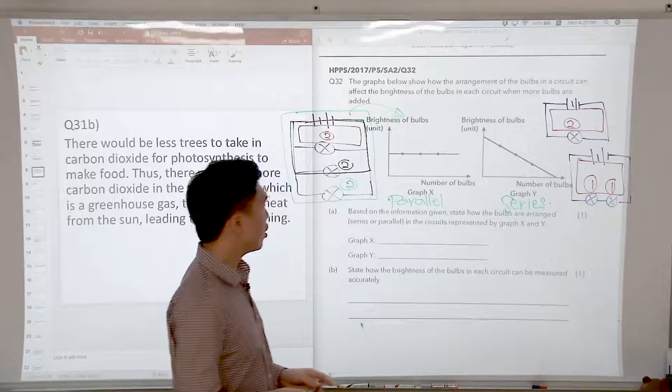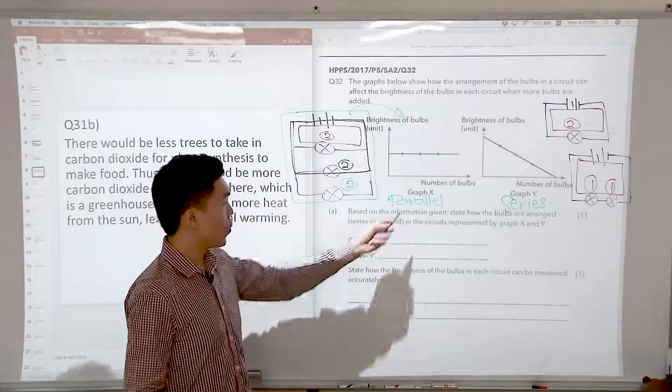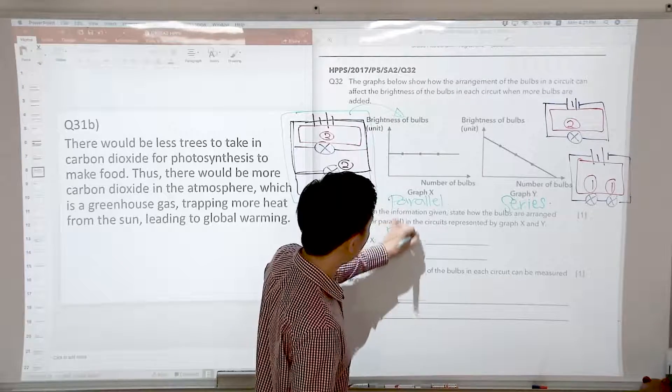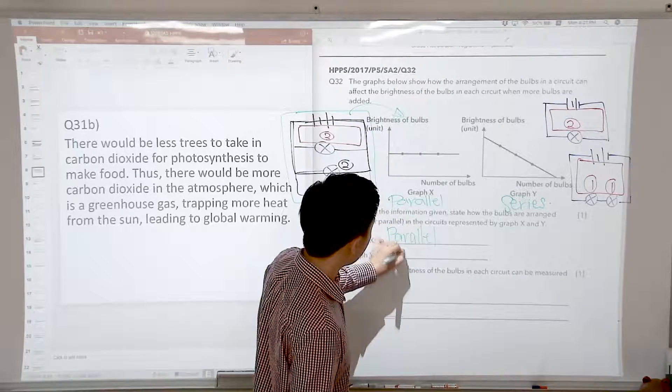So for part A, based on the information given, state how the bulbs are arranged, series or parallel. X is parallel circuit and Y will be a series circuit.